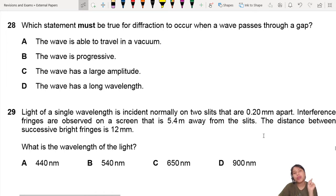Which statement must be true for diffraction to occur when a wave passes through a gap? When I say wave passes through a gap, it really means a diffraction gap, like that.